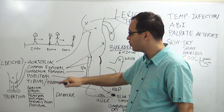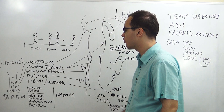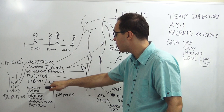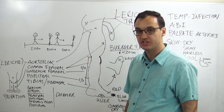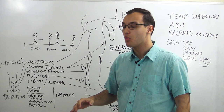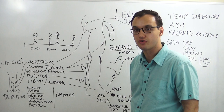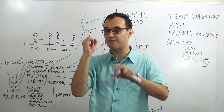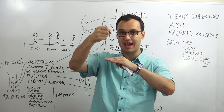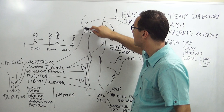For the superficial femoral artery, pain is in the upper two-thirds of the calf. For the popliteal artery, pain is in the lower one-third of the calf. For the tibial and peroneal arteries, pain is in the forefoot region. Remember: stenosis causes pain distal to the affected artery — everything below the stenosis is painful.